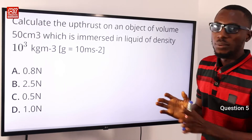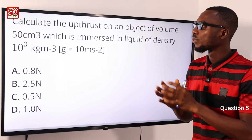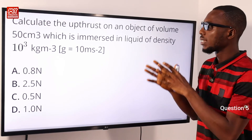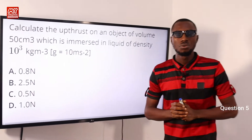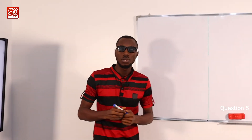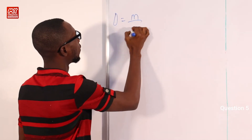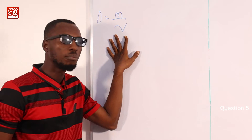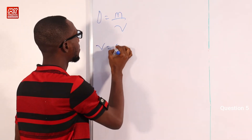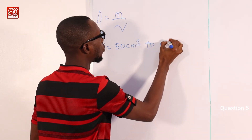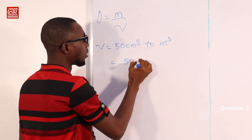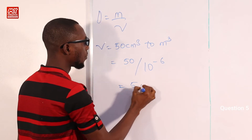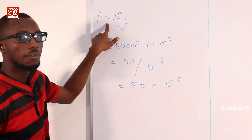Question 5: calculate the upthrust on an object of volume 50 cm³ immersed in a liquid of density 10³ kg/m³, given g = 10 m/s². Recall that density = mass/volume. The volume given is in cm³, so we convert to m³: 50 cm³ = 50 × 10⁻⁶ m³.